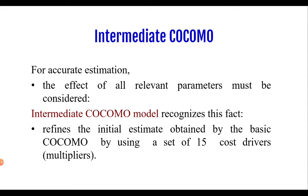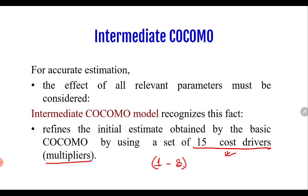For accurate estimation, the effect of all relevant parameters must be considered. The intermediate COCOMO model refines the initial estimate obtained by basic COCOMO by using a set of 15 cost drivers, also known as multipliers. These cost drivers have an impact and are rated on a scale of 1 to 3.